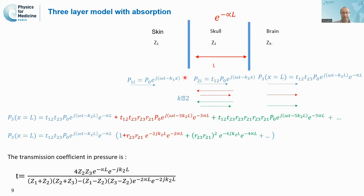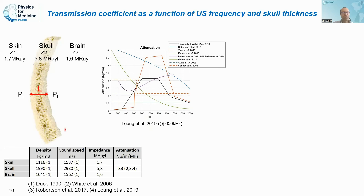In order to determine the attenuation to inject into our model, we looked at the literature. Several models have been used in the past, and we used as a conservative value A = 83 neper per meter per megahertz, which is actually the lower bound of all absorption models that have been used and measured through the skull.